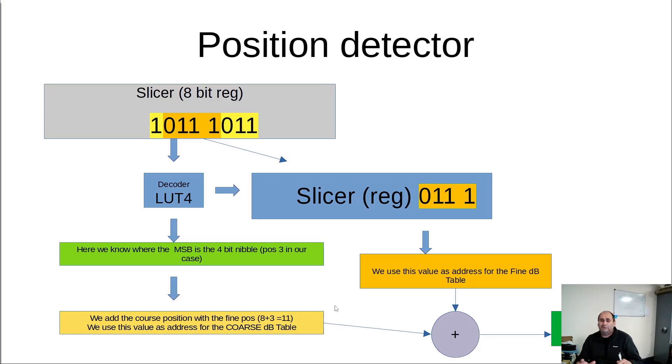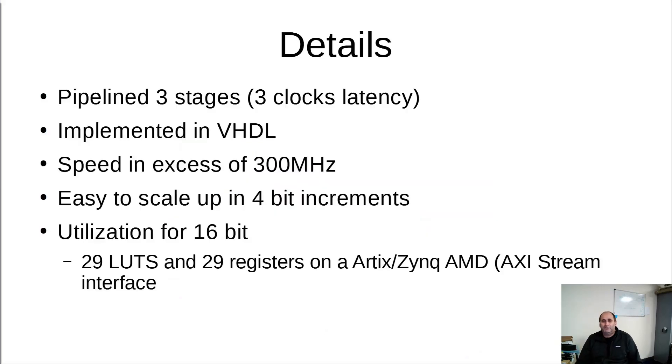So this is different from the method which is represented on the website, where they shift in order to figure out where the MSB is. They shift the value until the MSB hits the higher position in the bit field. Because I don't like that, because it's variable, depending on the number, you need to shift more or less.